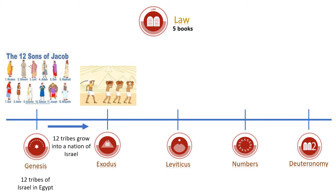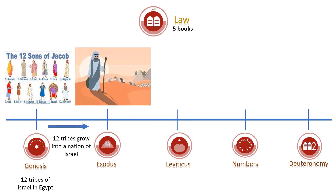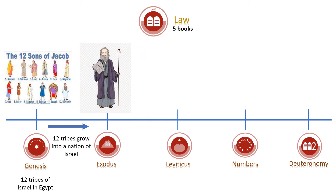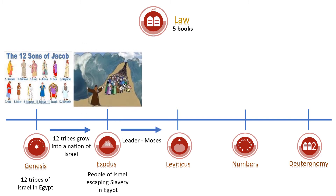At the end of Genesis, the 12 tribes of Israel are in Egypt and they grow in number, but they are treated as slaves. In the book of Exodus, God chooses Moses to rescue the Israelites from slavery in Egypt. God also gives the Ten Commandments through Moses to help them understand how to worship God and live their lives. With God's help, Moses parts the Red Sea and they begin their journey to the promised land of Canaan.